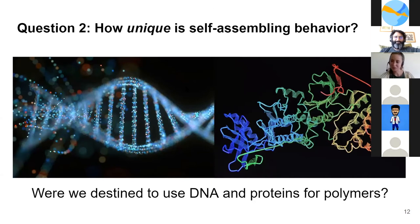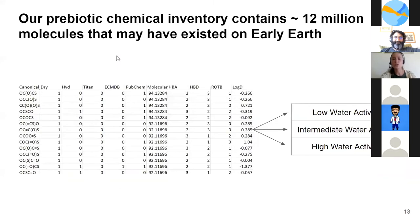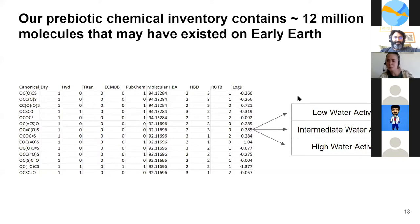Unfortunately, we can't go back in time to sample the early earth for what small molecules might have existed. But we do have computational chemistry. Through molecular generating software, we have a prebiotic chemical inventory of 12 million small molecules that might have existed on the early earth. We also looked at different conditions based on water activity — depending how much water is present, that affects what chemical structures are allowed to exist. We looked at three levels of water activity to guide our search.